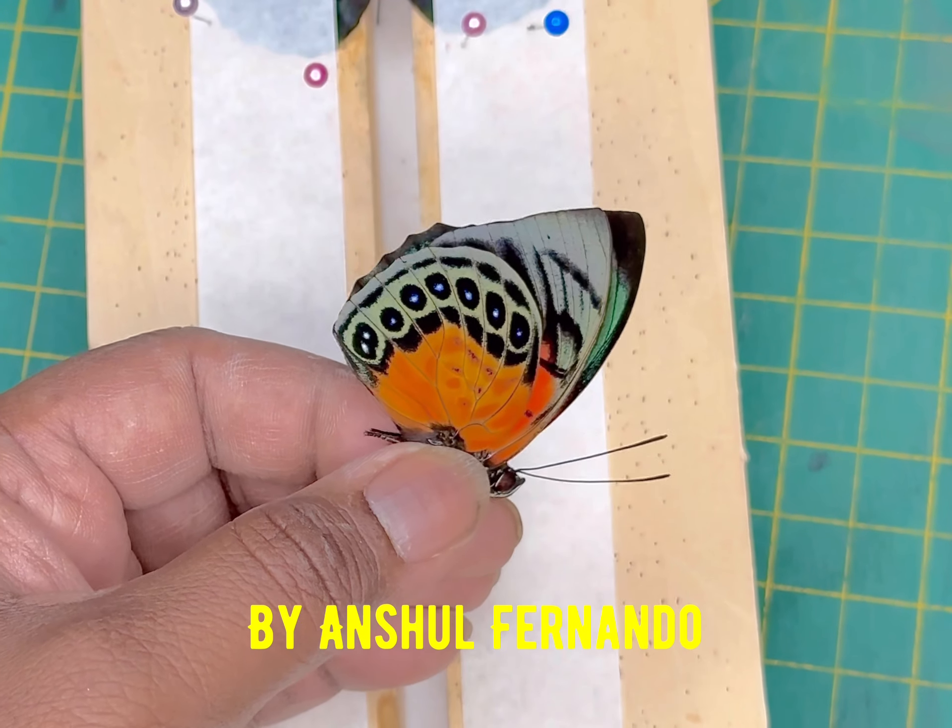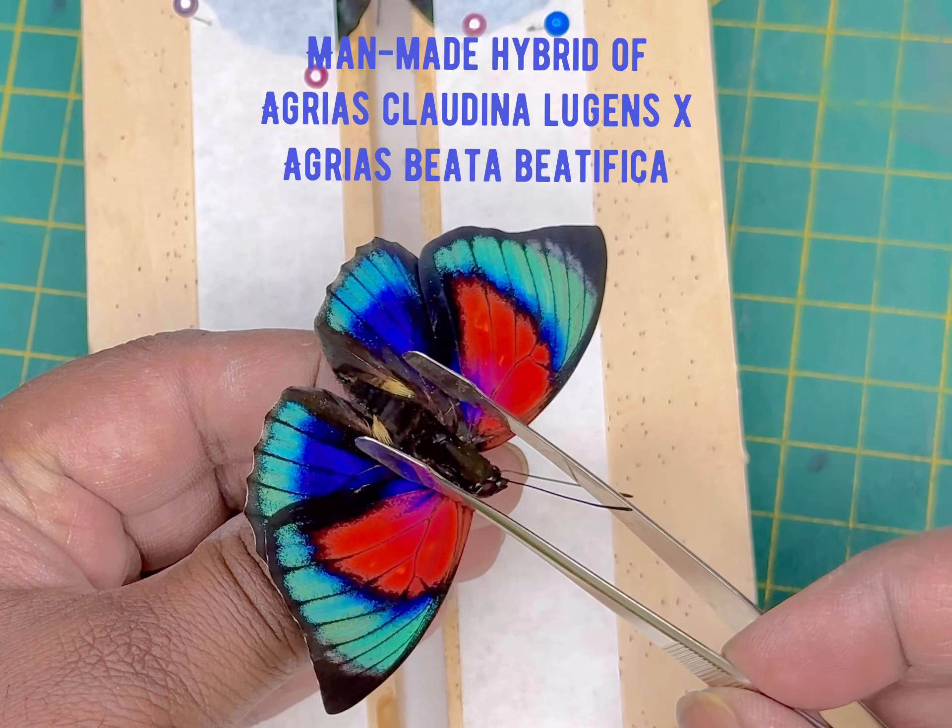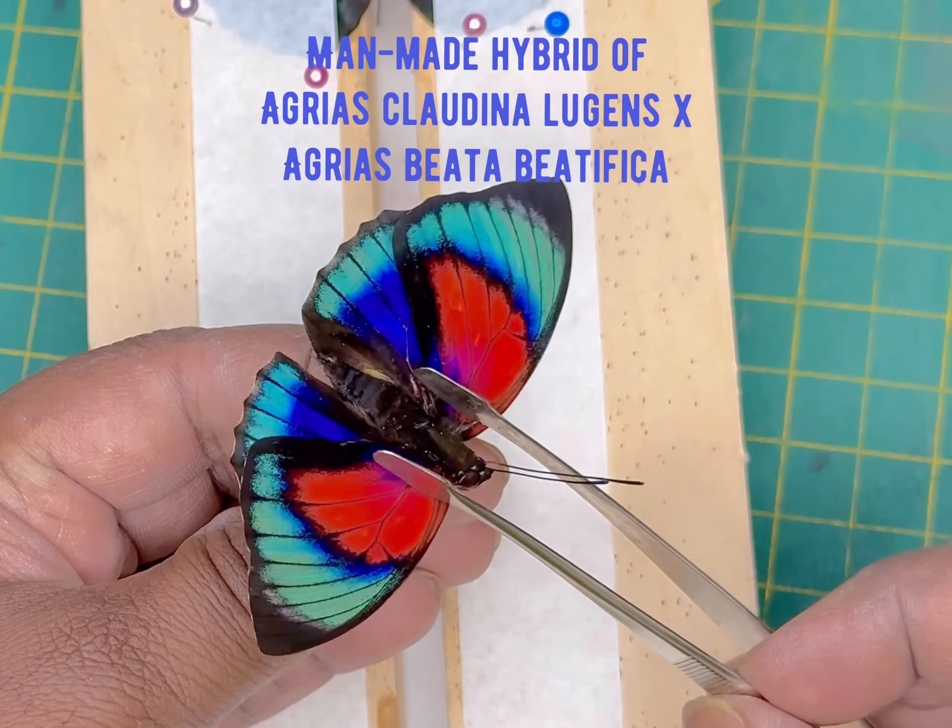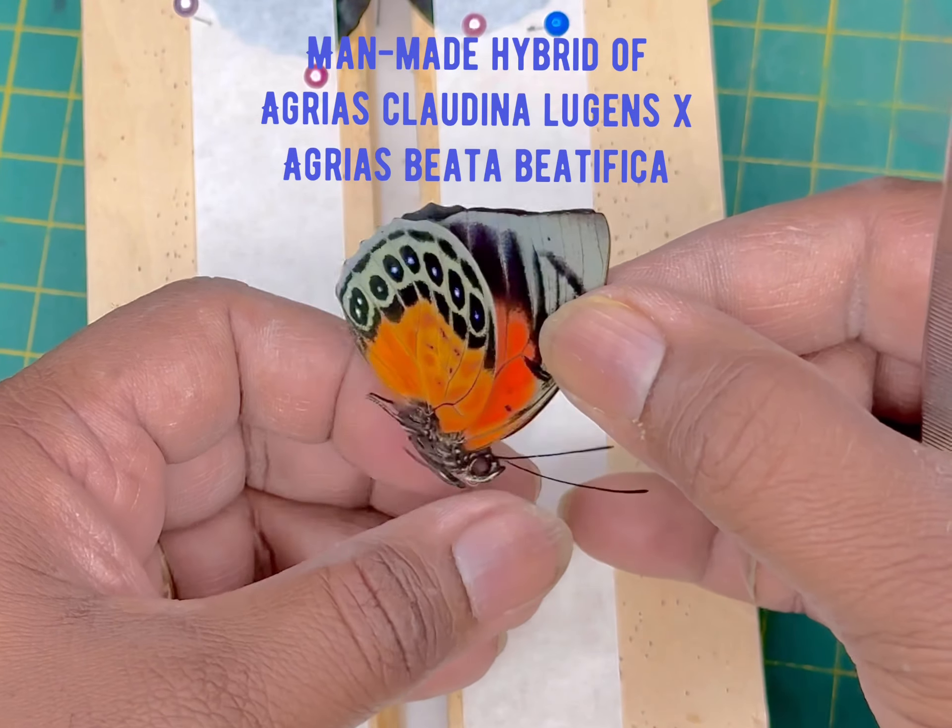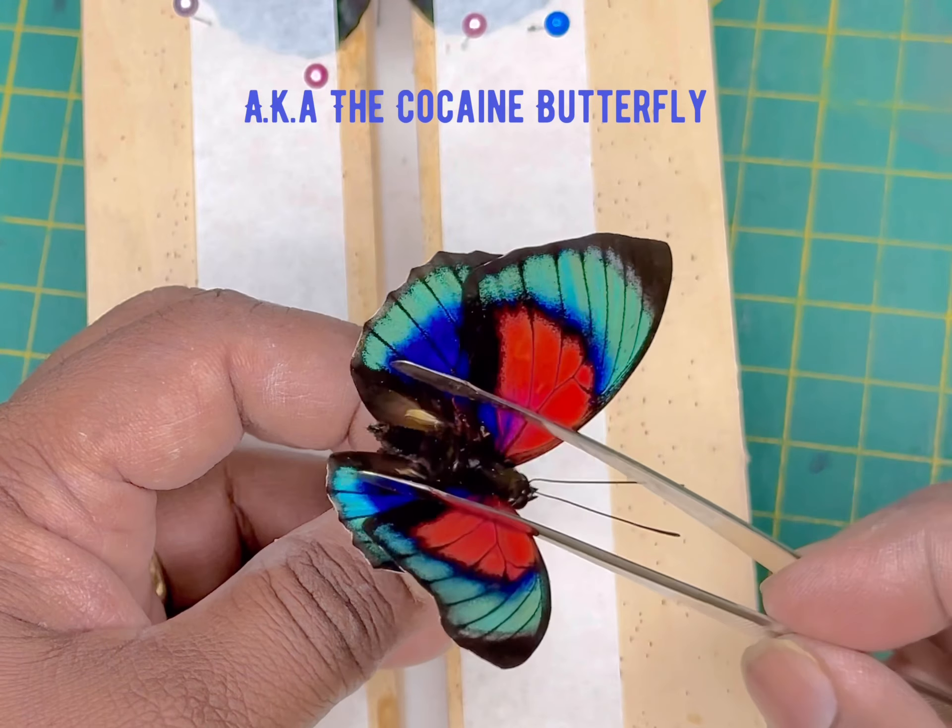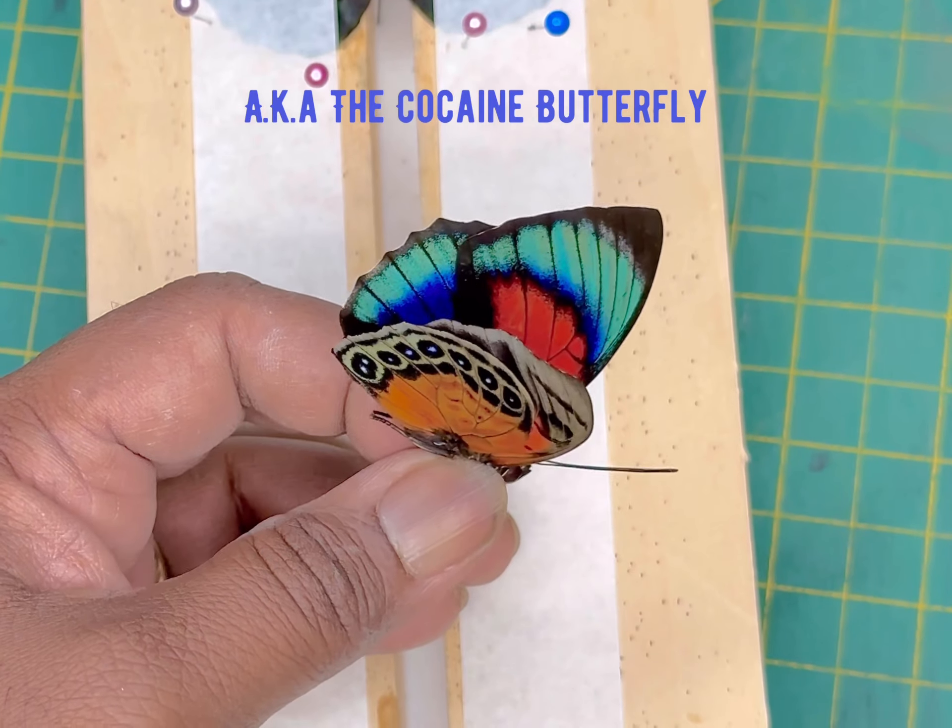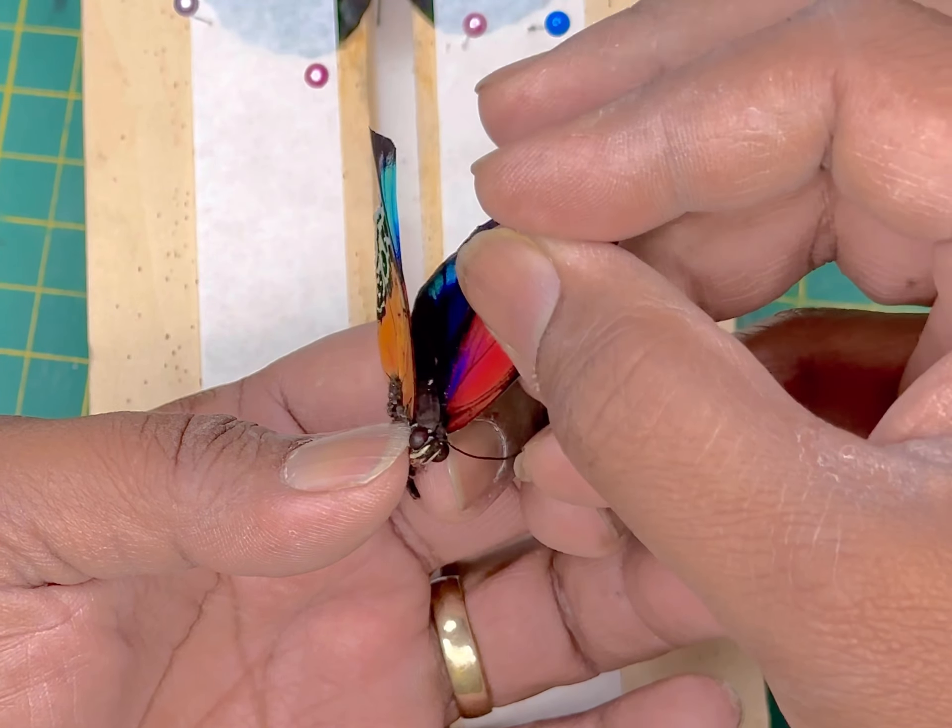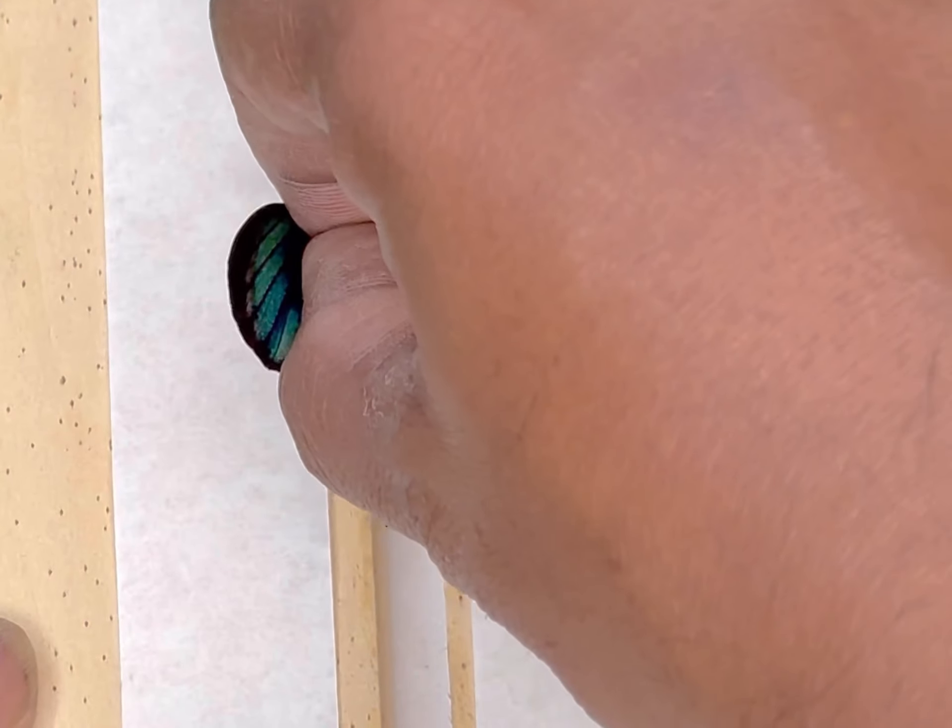Hi guys, I'm going to be mounting today the hybrid that we have created by taking Agrias claudina lugens and pairing it with Agrias beata beatifica. That is a male that we have manually created in the Amazon in Peru. I recently was able to acquire a whole bunch of these that we have farmed.